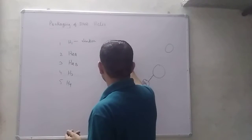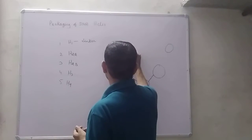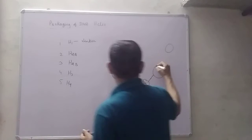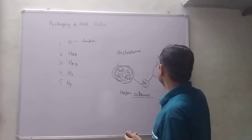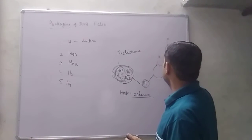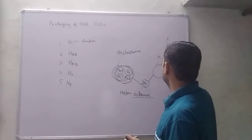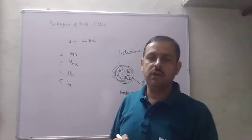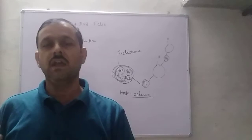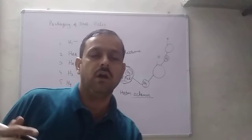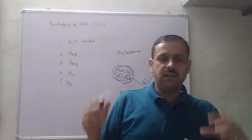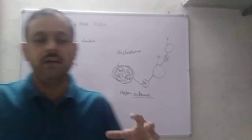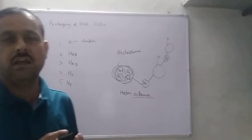ऐसे दूसरा octamer हो सकता है, और इन octamers को connect करने वाली linked करने वाली जो structure है वो H1 है। तो we can say that the negatively charged DNA is wrapped around the positively charged histone octamer to form a structure called nucleosome. Two nucleosomes are conjoined with H1 linker protein. A typical nucleosome has 200 base pair DNA helix।